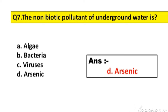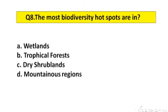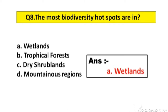Question number 8. The most biodiversity hotspots are in. Option A: Wetlands. B: Trophic. The right answer is option A, Wetlands.